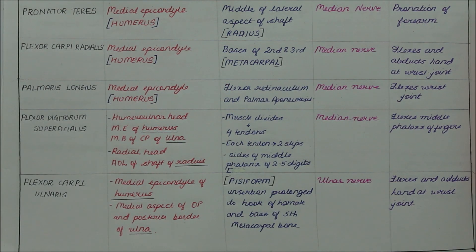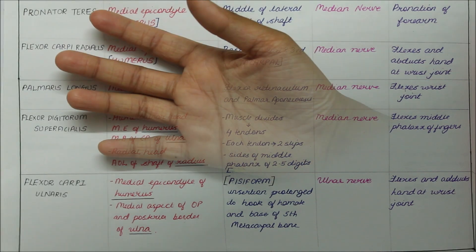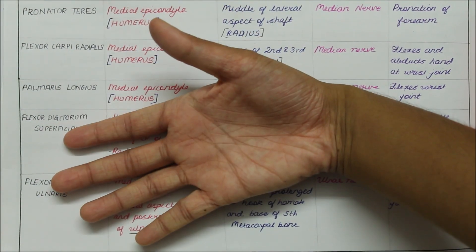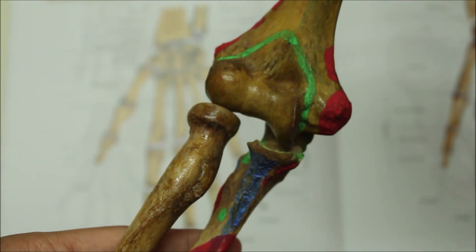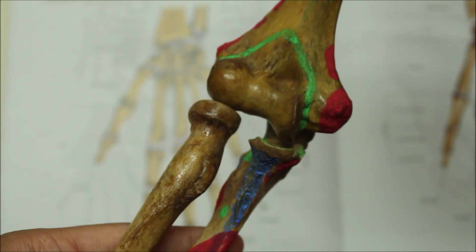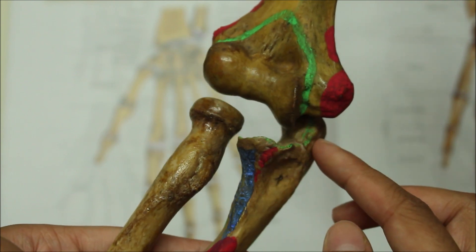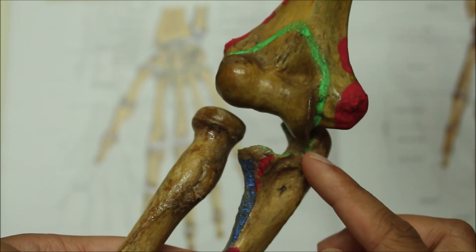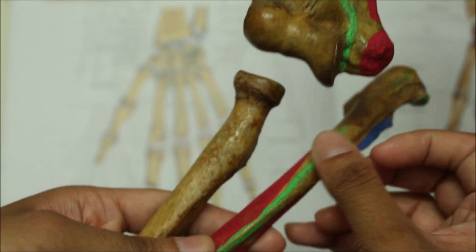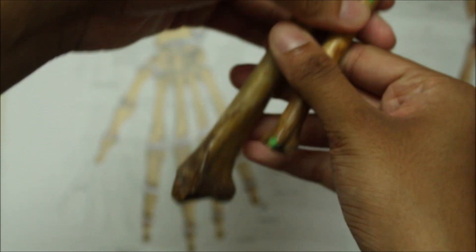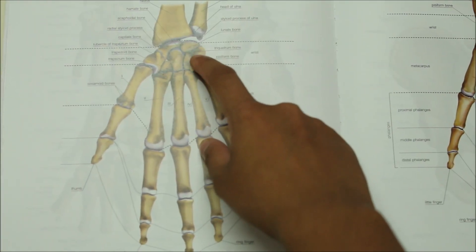The flexor carpi ulnaris is supplied by the ulnar nerve. Its action includes flexion and adduction of the hand at the wrist joint. As a whole, it originates from the medial epicondyle of the humerus, the medial aspect of the olecranon process, and the posterior border of the ulna, and inserts into the pisiform bone.